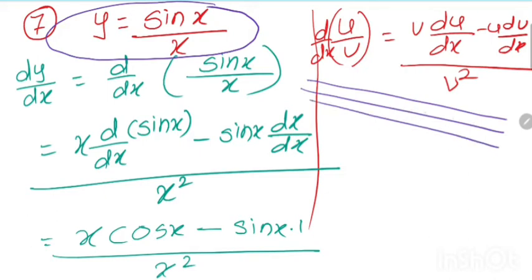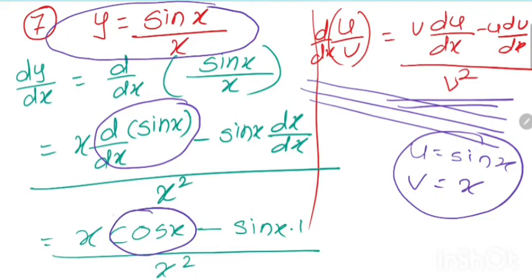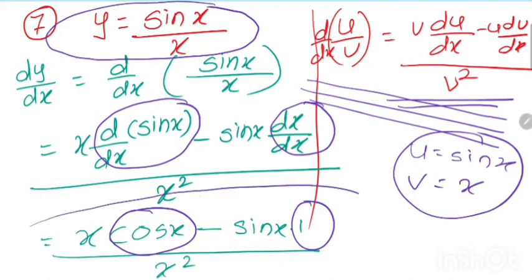The formula is d by dx of u by v equals v du upon dx minus u dv upon dx divided by v square. Here u is sin x and v is x. The derivative of sin x is cos x and dx by dx is 1. So the answer is x cos x minus sin x over x square.